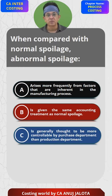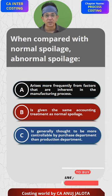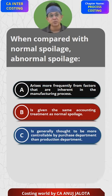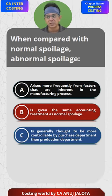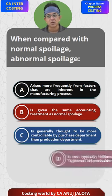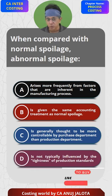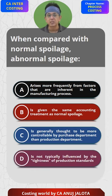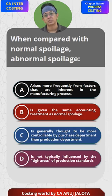We are talking of normal spoilage during the manufacturing process, so the department that comes into play is the production department, not the purchase department. Therefore, option C also cannot be the correct answer. So the answer should be D — it is not typically influenced by the tightness of the production standards.